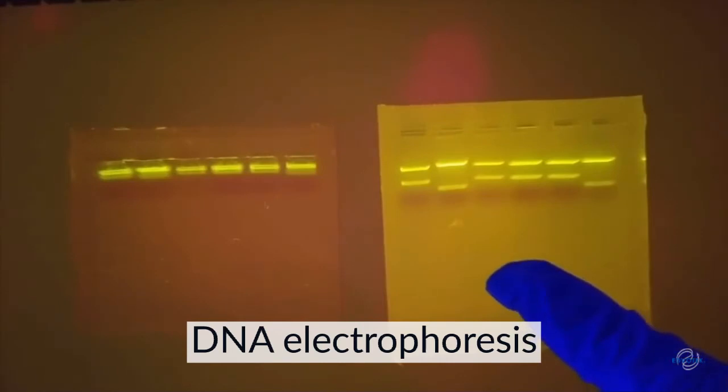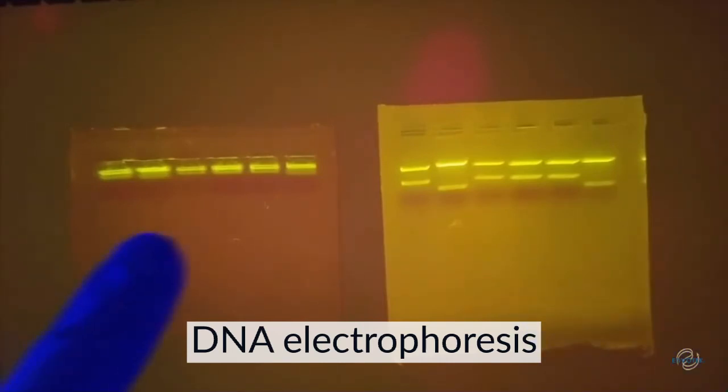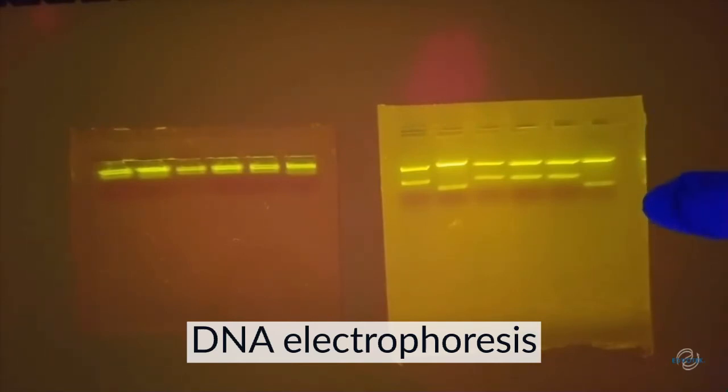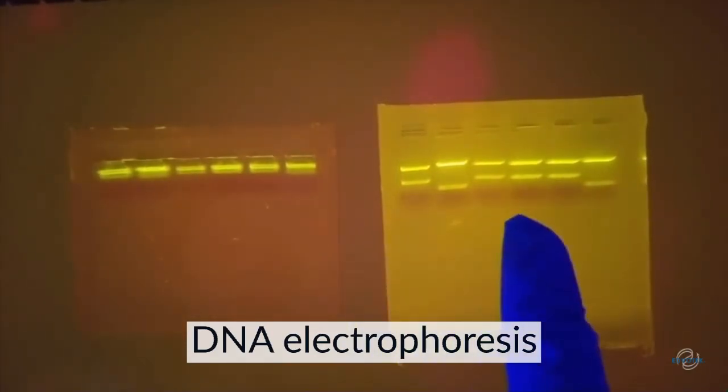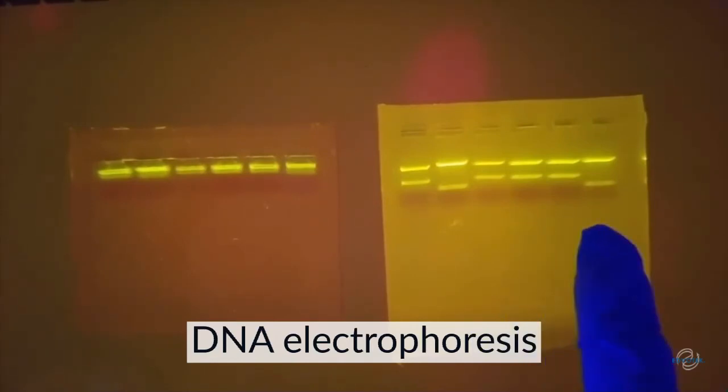Again, our buffer gel is on the right hand side and our water gel is on the left. In these gels, we use CyberSafe so that we can see the migration of the DNA through the gel. What you can see is in the gel where we used water, we don't see the DNA migrating through the gel. In the gel where we use buffer, we can see the DNA bands separating and migrating in each of these wells. Our DNA is stuck near the wells in the water gel.